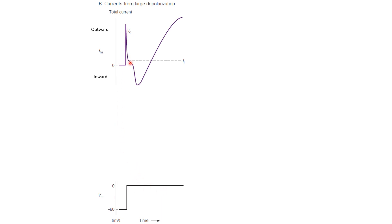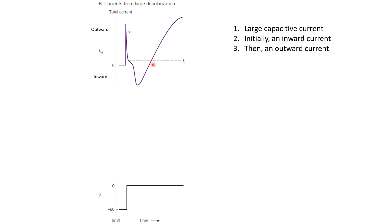We also see a downward deflection in the compensatory current, and then it becomes a positive deflection. So overall, in the beginning we see this large capacitive current, then there is a negative compensatory current — which means there must be a positive ionic current, so current is coming into the neuron in the beginning. And then later we see a positive compensatory current, which means current is flowing out of the neuron. These later components — the downward and then upward deflection varying over time — must be because of the voltage-gated conductances.